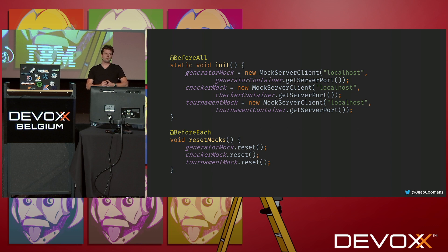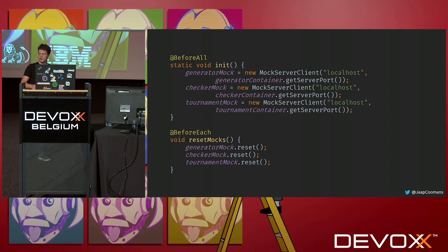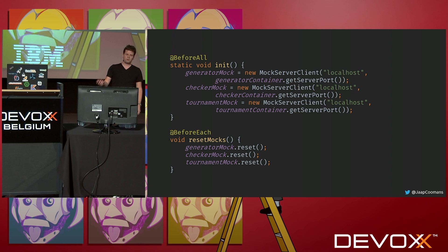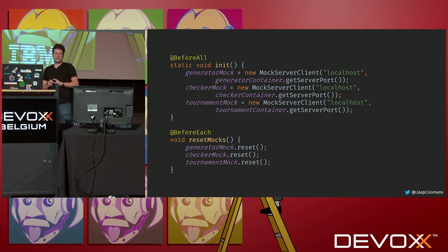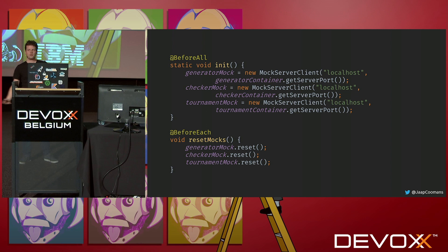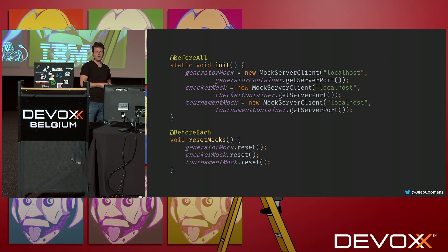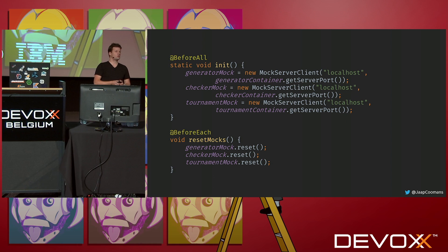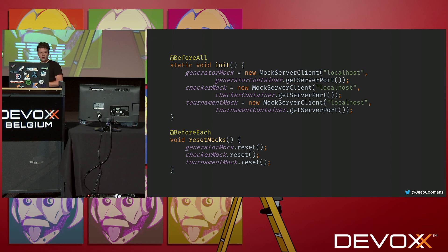Then there's some boilerplate — I initialize all the clients for MockServer, which I treat in my test code as the mocks, because you'll see they're quite similar in API to your familiar mocking framework. I have a generator mock, a checker mock, and a tournament mock. Because the MockServer client is running for my test, I need to connect through localhost to the randomly chosen server port. And I reset my mocks before every test runs — you might recognize that from your favorite mocking framework.